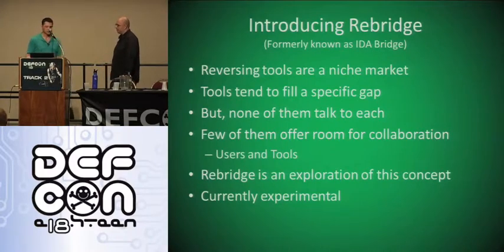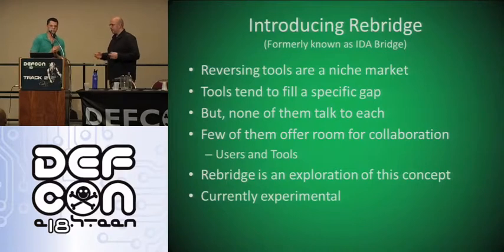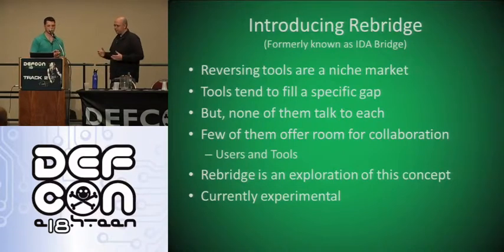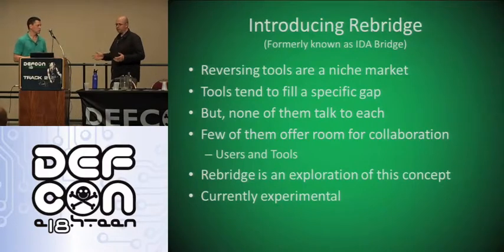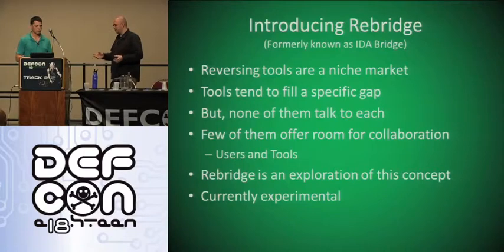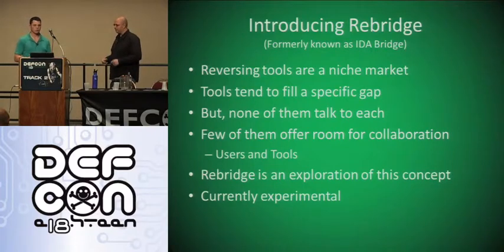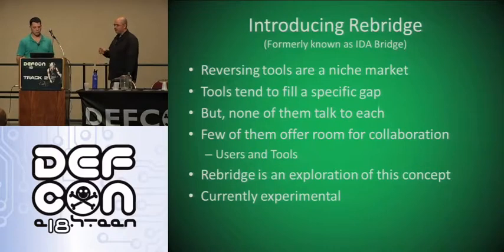Now we're going to talk about RE Bridge, originally called IDA Bridge. The basic idea: we have all our debuggers, everybody uses IDA, but you might prefer Immunity Debugger or WinDbg. IDA has its own debuggers but they're pretty terrible to use. You have your own debugger with all your scripts and you just want the tools to talk to each other. It started as IDA Bridge but then we thought all these tools might want to communicate — you need to get information from one source to another, and RE Bridge is meant to fill that gap.